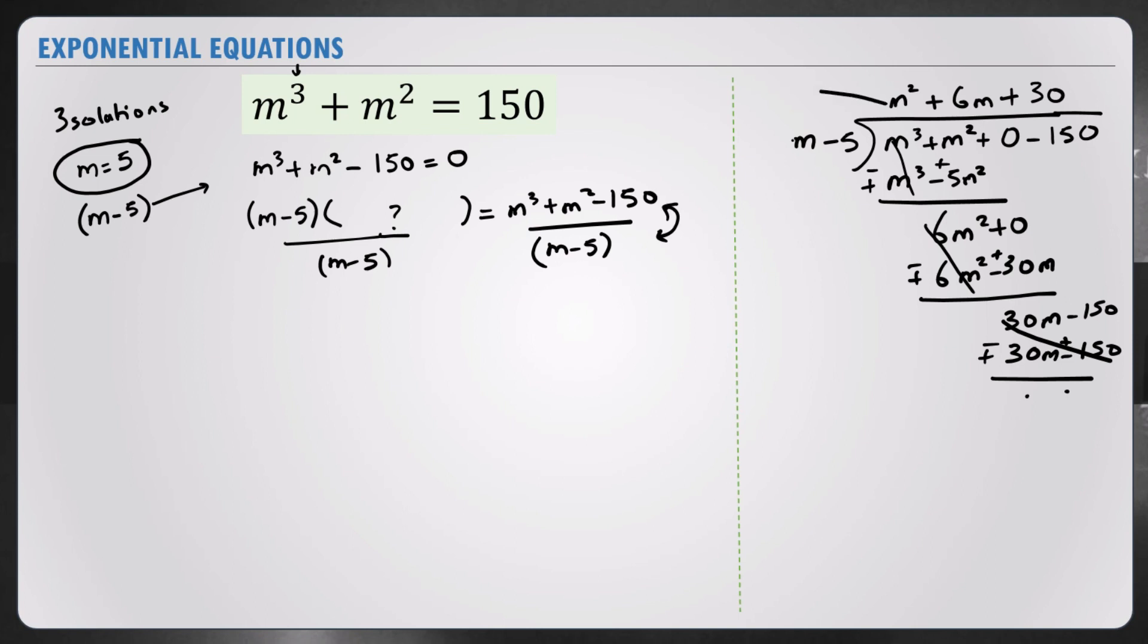So this equation comes here. Let's solve this equation m squared plus 6m plus 30 using the quadratic formula where a equals 1, b equals 6, and c equals 30.